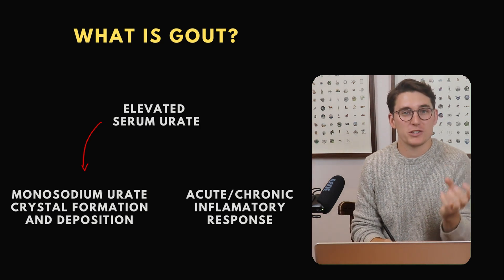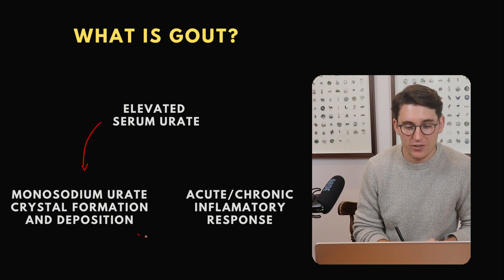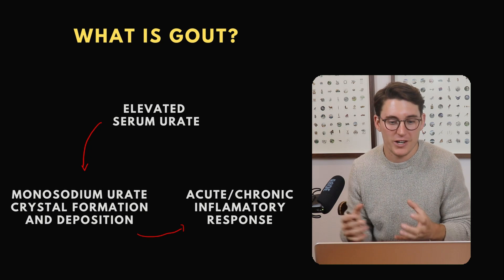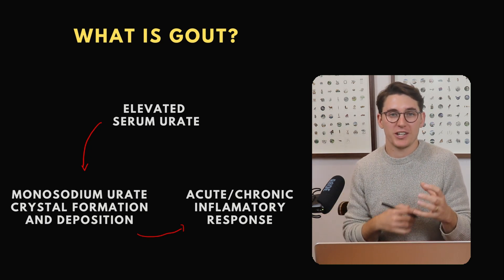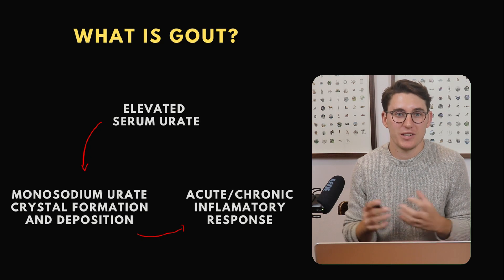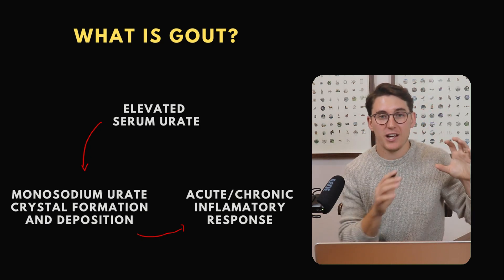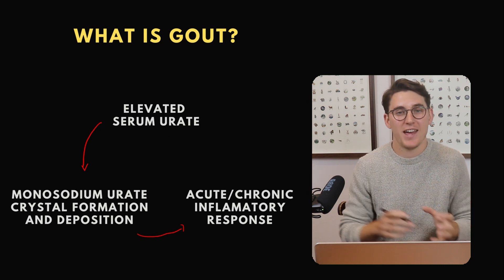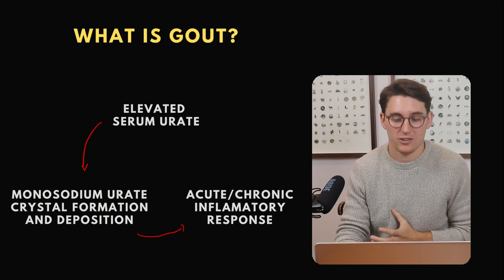Once those crystals have been deposited in the soft tissues, the body will have an acute inflammatory response. Patients will often present with a swollen, painful, red joint. If that happens often enough, we start getting chronic inflammatory changes. It's this triad — the high levels of urate, the monosodium urate formation and deposition, and the inflammatory response — that gives us the clinical syndrome of gout.